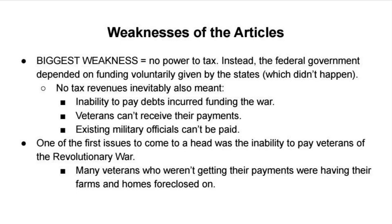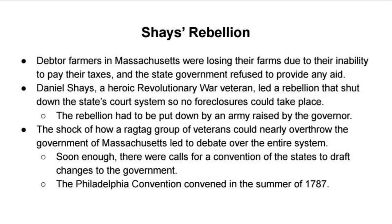This lack of ability to pay veterans and existing military officials led to one of the scariest moments in the early republic. Veterans started to get really angry with the government, and it led to an event known as Shays' Rebellion in Massachusetts. There were farmers in debt who wanted payments from the government, but without any tax revenue the government couldn't give them the money they needed to keep their farms, which were at risk of being foreclosed on. Daniel Shays, a hero of the Revolutionary War, led a rebellion that shut down the state's court system to prevent foreclosures from continuing. This rebellion had to be put down by an army raised by the governor, and it was barely put down.